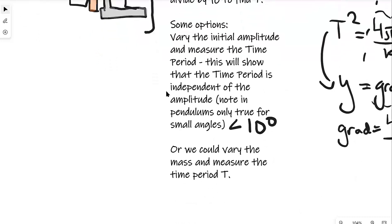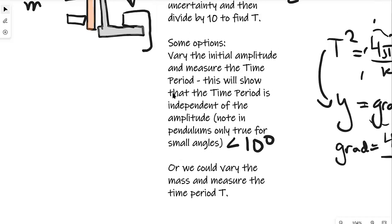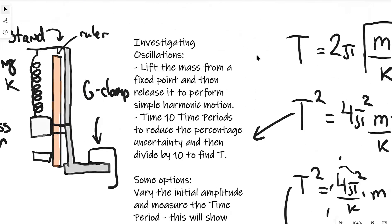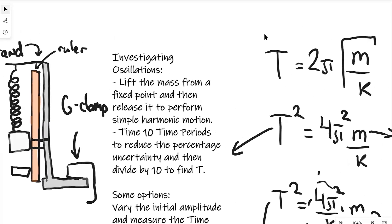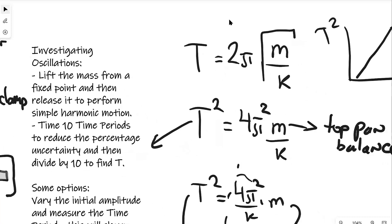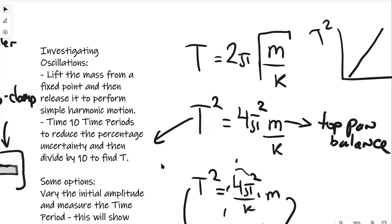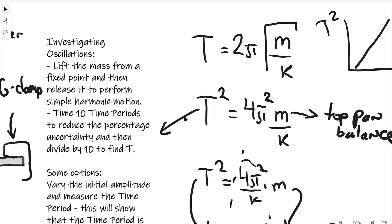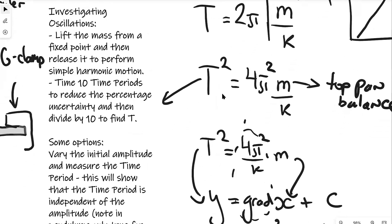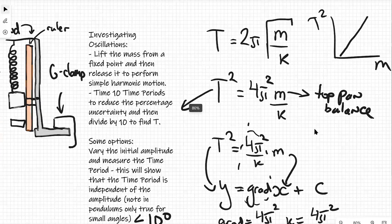We could also vary the mass and measure the time period T as well. Now if that's the case they could ask us to investigate an equation. This could be a completely unknown equation, maybe some sort of a suggestion. An equation which is not on the spec but sometimes appears in practical questions is T = 2π√(m/k). In order to investigate this we could measure the time period T, and by that we could vary the mass and measure the time period. So if that's the case we could plot a graph of T² against m.